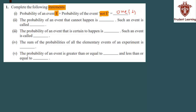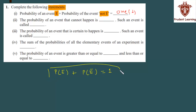The probability of an event E plus the probability of the event not E is equal to 1. Not E means the event cannot happen. Their sum is always 1. The probability of any event happening, plus the probability of that event not happening — their sum is always 1. This formula will appear in further questions in the exercise as well.